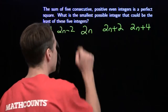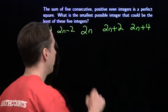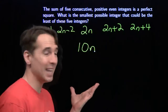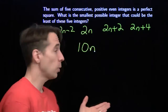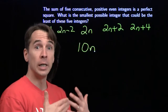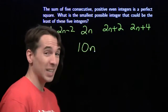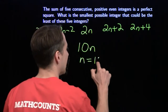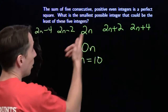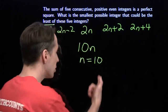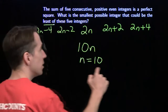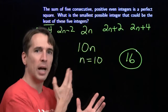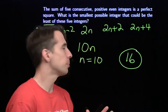Taking the middle number and multiplying by how many numbers we have: five copies of 2n gives us 10n. We need this to be a perfect square, and we know n is a positive integer. The smallest positive multiple of 10 that is a perfect square is 100, which tells us n is 10. We want the least of these five integers: 2 times 10 is 20, minus 4 gives us 16. Thinking about the middle number solves the problem.